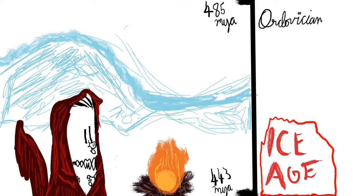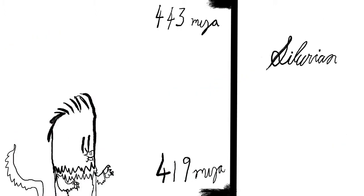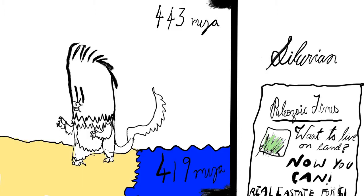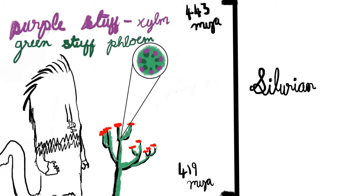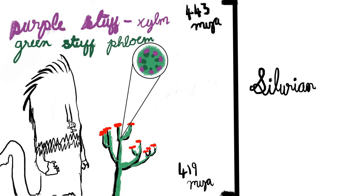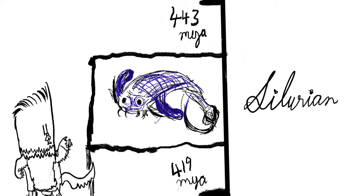The Earth entered an Ice Age. After the Ordovician came the Silurian period. The Silurian period saw life on land for the first time, in the form of vascular plants like Cooksonia. Vascular plants means plants with tissues called xylem and phloem that conduct water and food material around the plant. Also, a creature called the Eurypterus lived during the Silurian period.